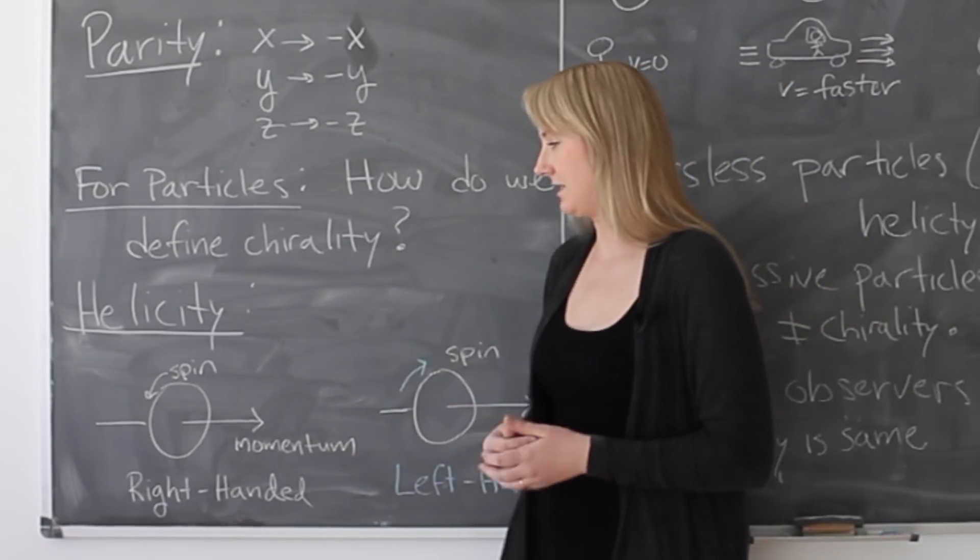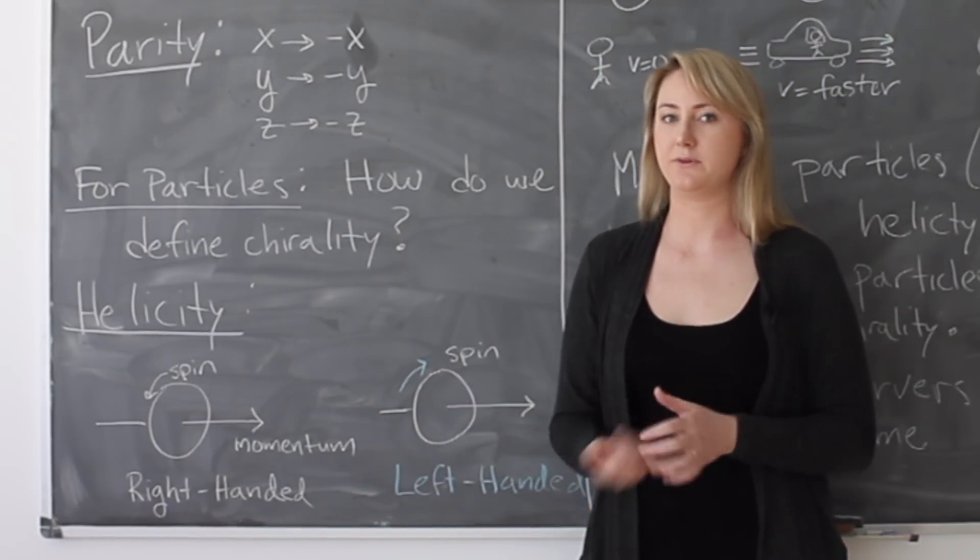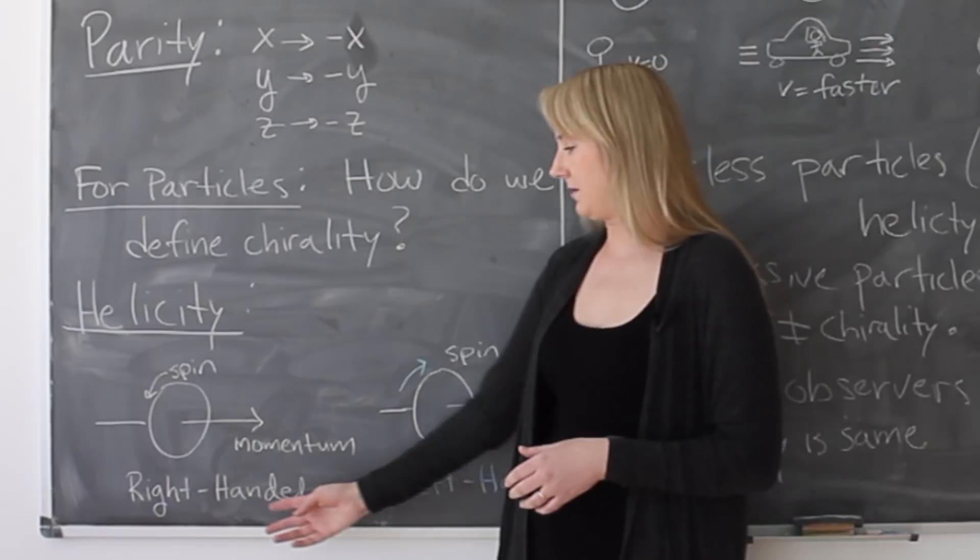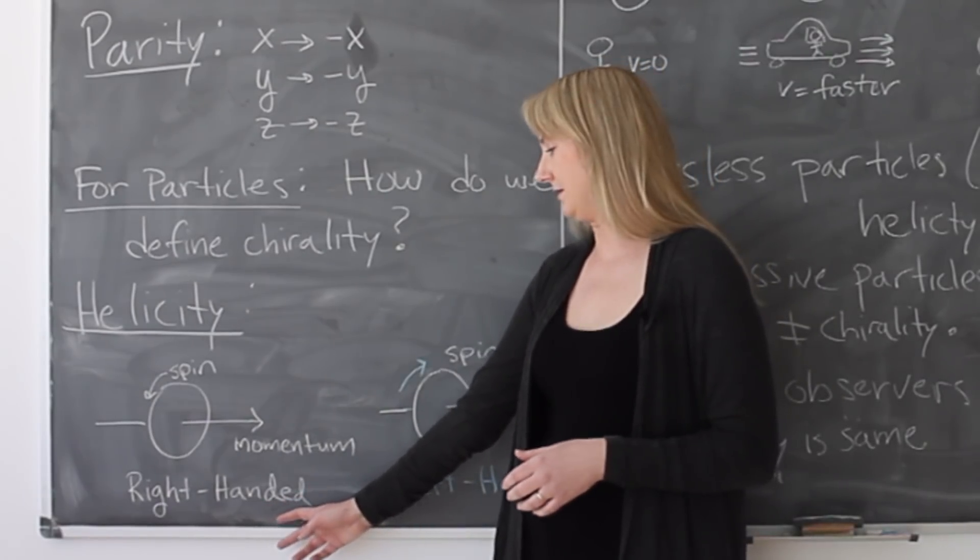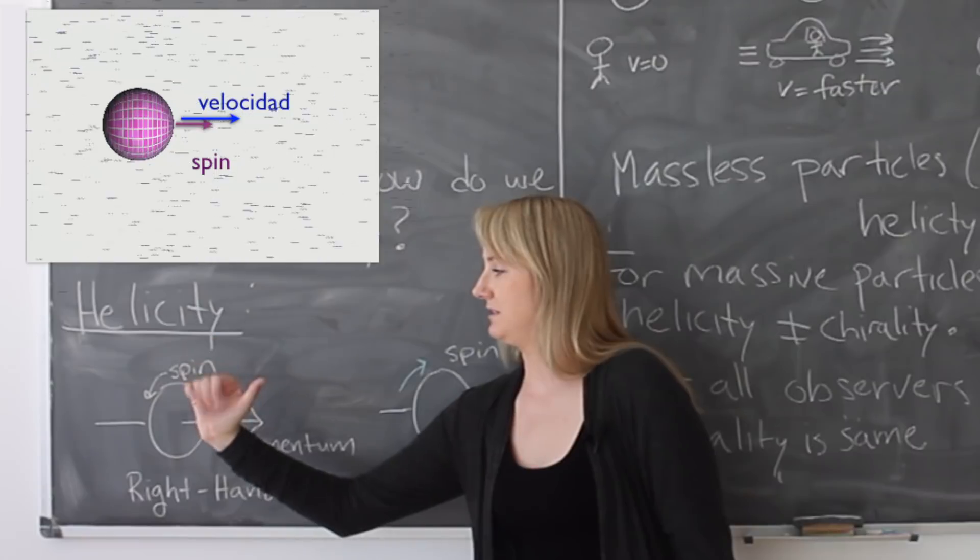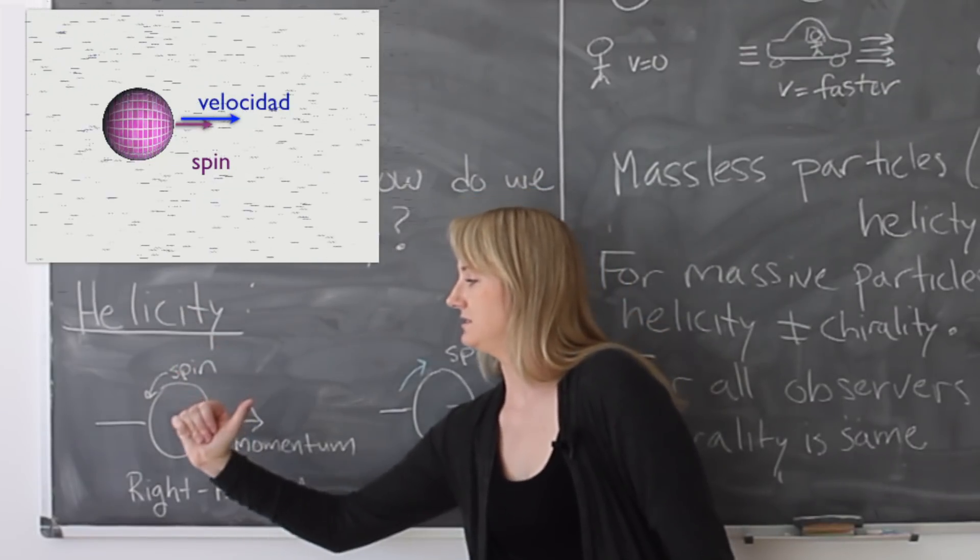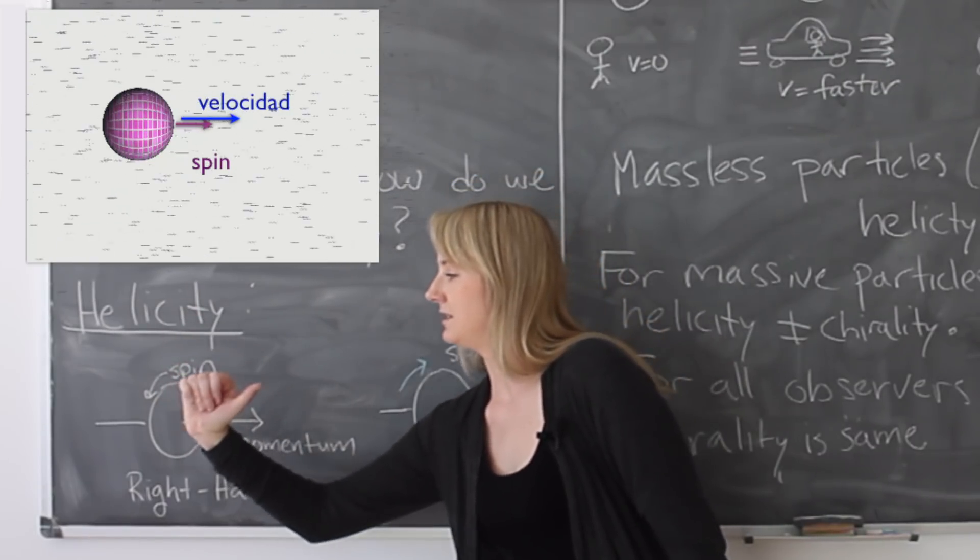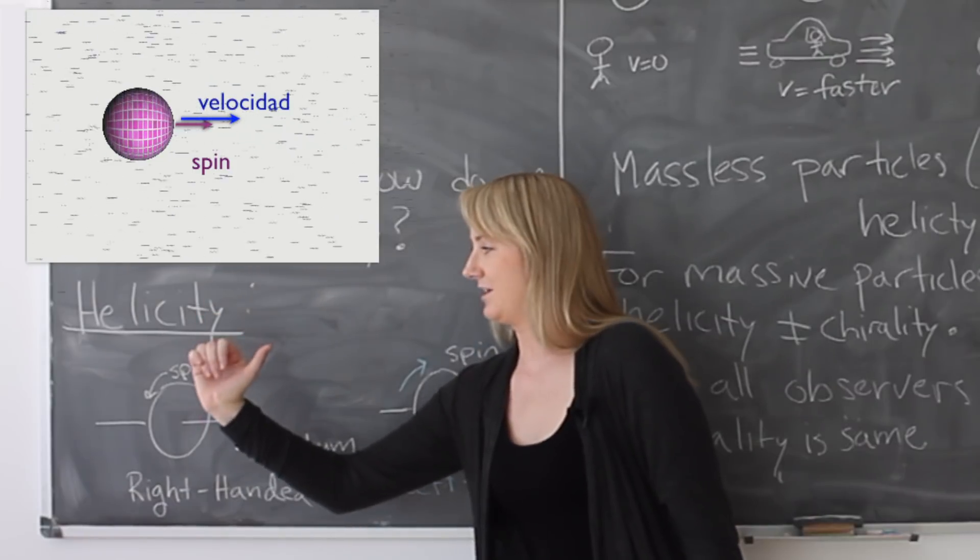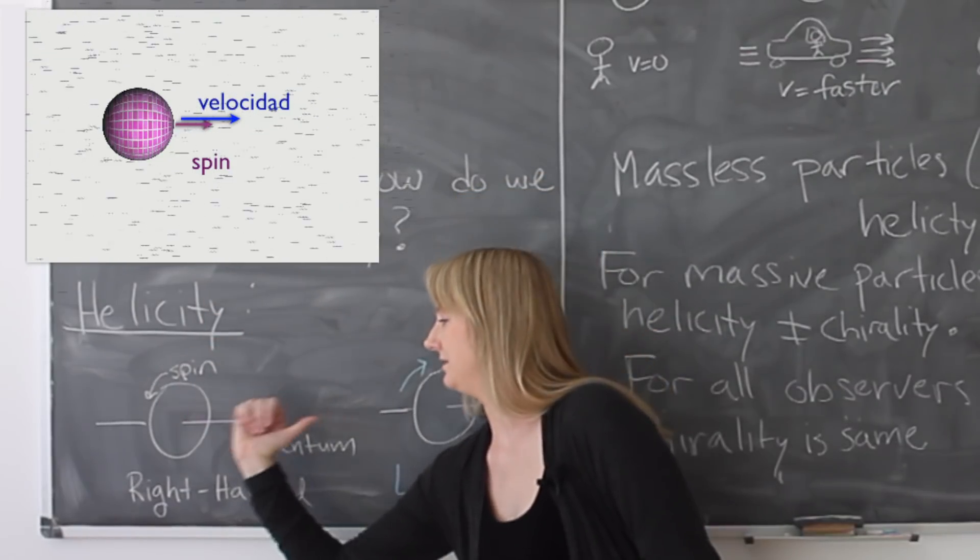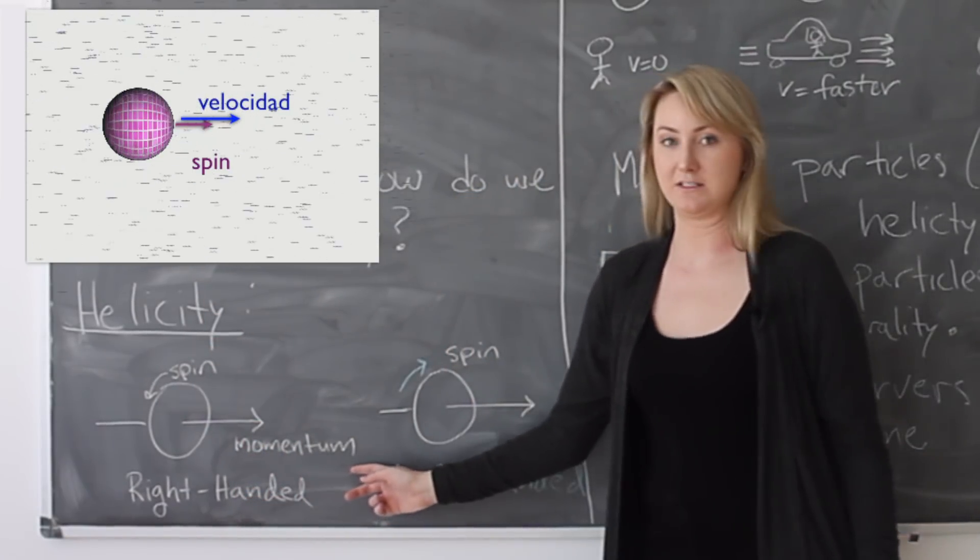So for helicity, it has to do with whether the spin lines up with the momentum. A particle with right-handed helicity, if it's moving this way, its spin is going this way. So its spin is going around this axis. And if I take my right hand and I go in the direction of motion, I'm pointing in the same direction that the momentum is.